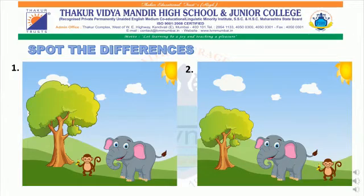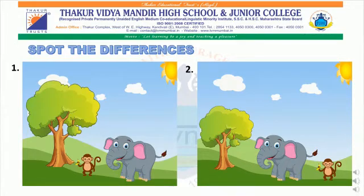So, children, can you observe any other difference in the picture? Yes, there is one more. In the first picture, the first cloud is half hidden behind the tree. Whereas, in the second picture, the first cloud is fully visible.